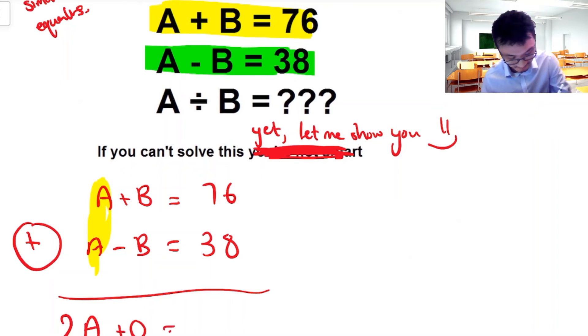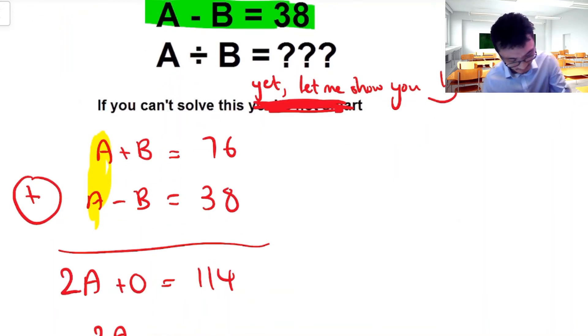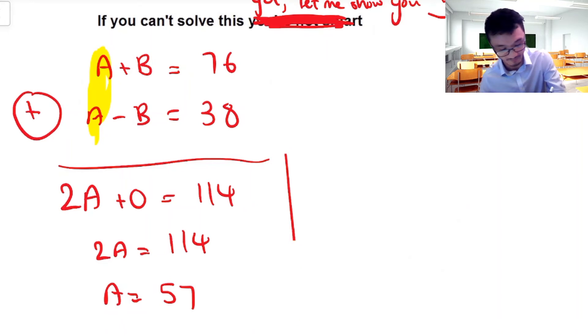That's just going to be zero. And then I'm going to add these two numbers here together, 76 and 38, that gives me 114. And so that leaves me with 2A is equal to 114. And so with algebra, if I've got two lots of something that's equal to a number, I can just divide both sides by two to give me what that number is going to be. So A is equal to 57.